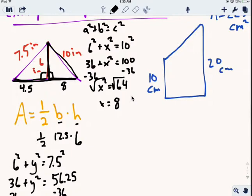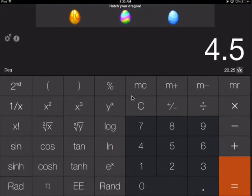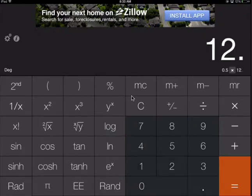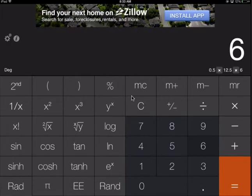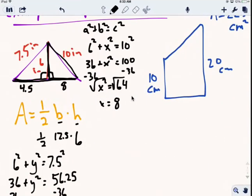Now we can calculate the area. Area equals one-half times 12.5 times 6, which gives us 37.5. So the area is 37.5 square inches.